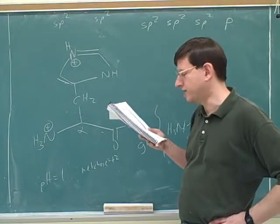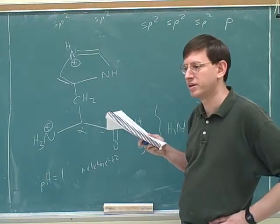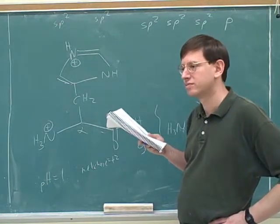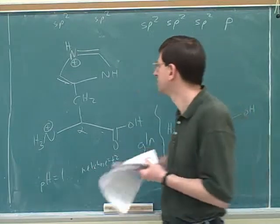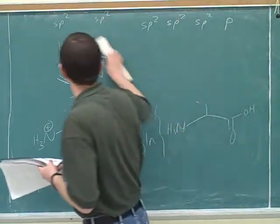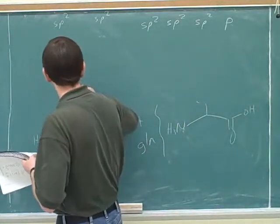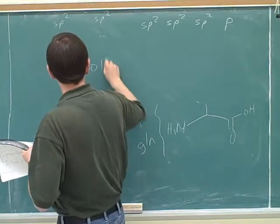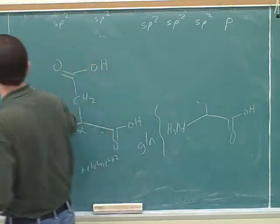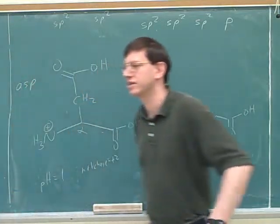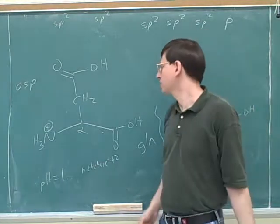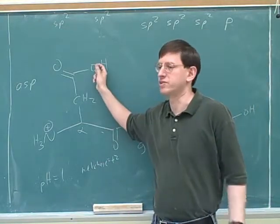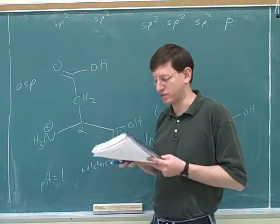What is that COOH? It's just a carboxy group. So it's another carboxy group in the side chain. This would be aspartic acid — that's the structure for aspartic acid. So besides deprotonating this carboxy group, we could also deprotonate this carboxy group.